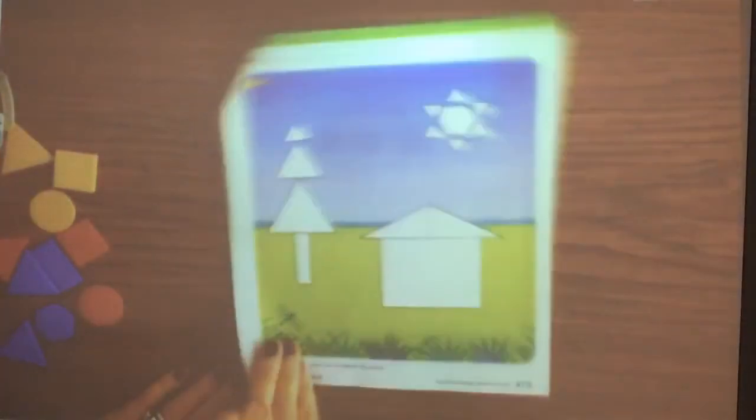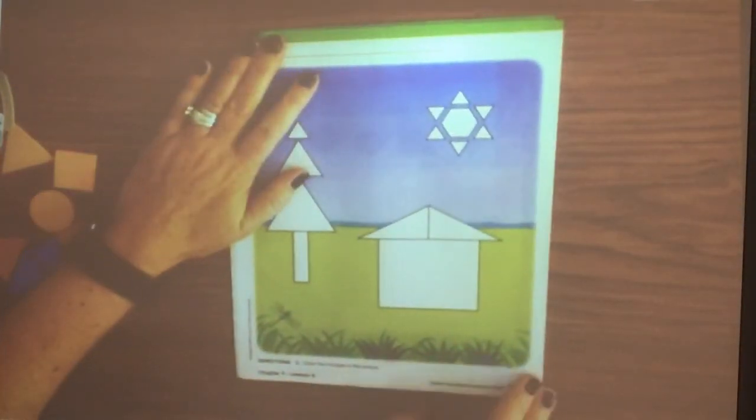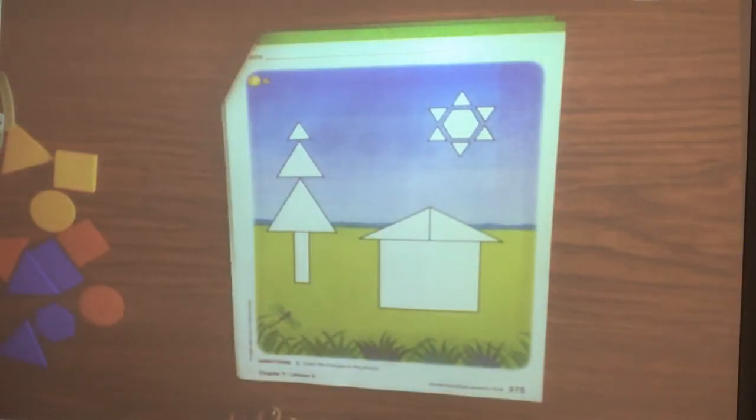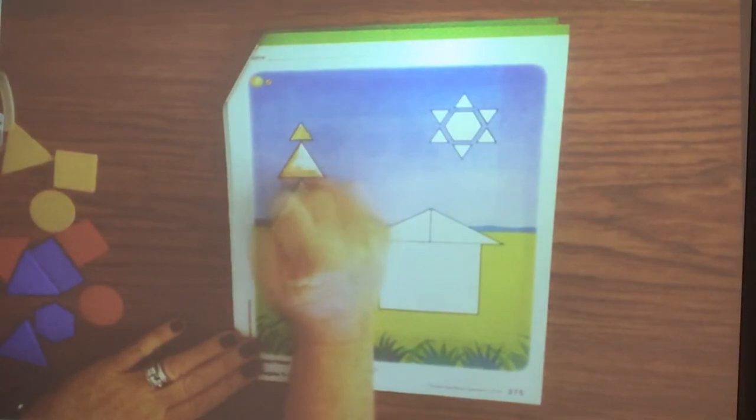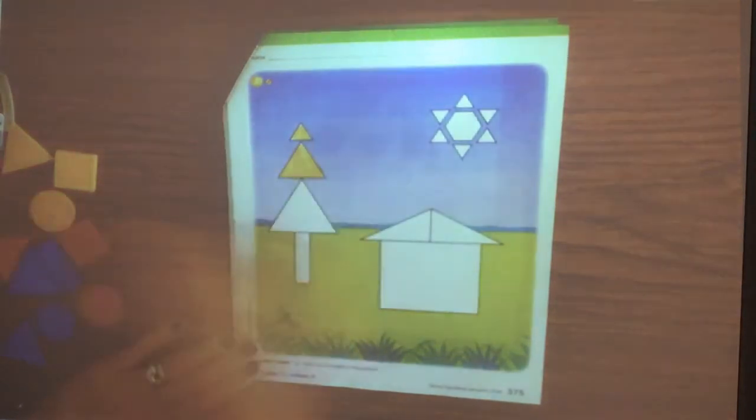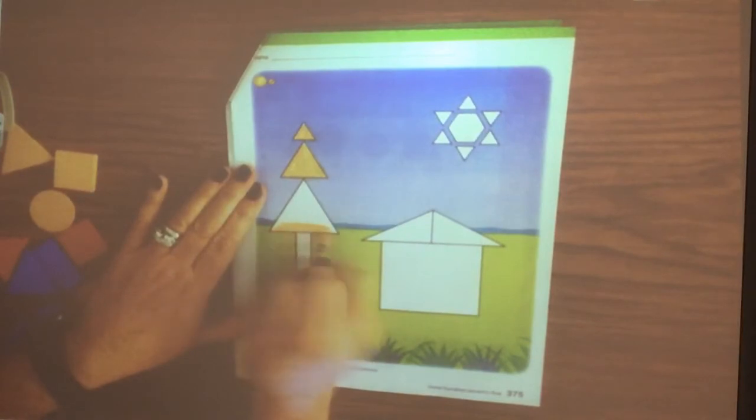Then your next page, when you finish that one and turn it over, you're going to color all the triangles in the picture. And there are a lot of them. So take your time and color them. Any triangles you find. They're all different sizes too. There's some little ones and some bigger ones. They're all different sizes. Only color the triangles.